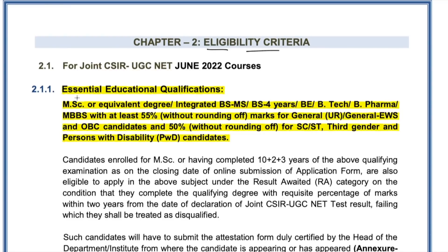Now let's talk about eligibility criteria — essential qualifications. MSc or equivalent degree is required. Integrated BS-MS students are also allowed. BS four-year degree, BE, BTech, BPharma, or MBBS — if you have done any of these degrees with 55% marks or more (without rounding off) you are eligible for General, EWS, or OBC categories. For SC/ST category, third gender, or persons with disability, only 50% marks are required — a five percent relaxation is given.